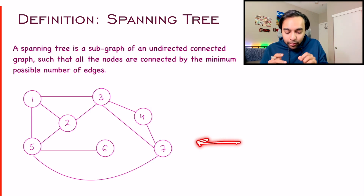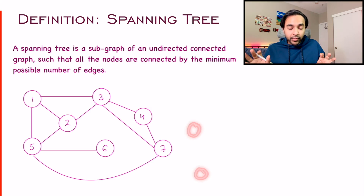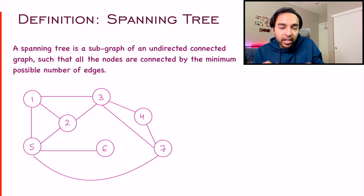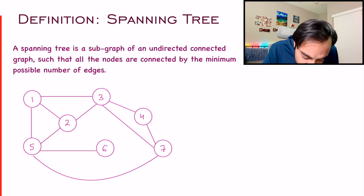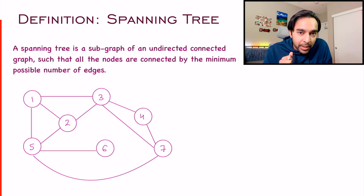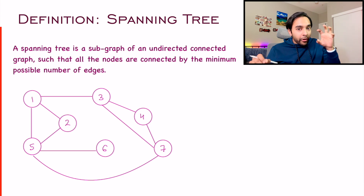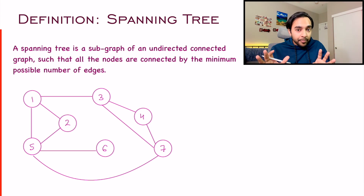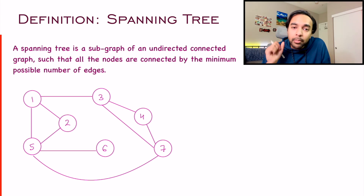Let us take up an example to better understand it. Right now, what I have over here is an undirected connected graph with no disconnected nodes. Now you have to convert it to a spanning tree. If you look at this particular edge and remove it completely, you will notice that my graph is still connected. There is a path from one node to any other node in the graph. So this edge was kind of redundant — you did not need it for the minimum possible edges.